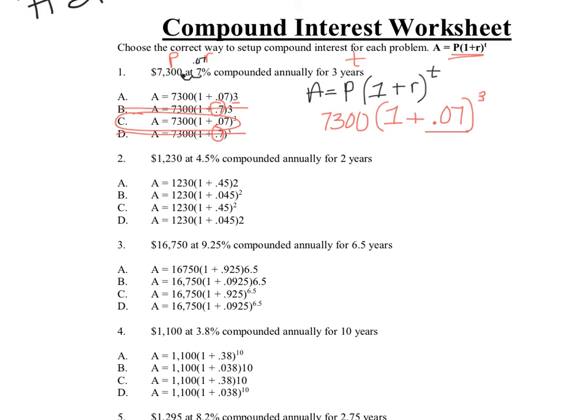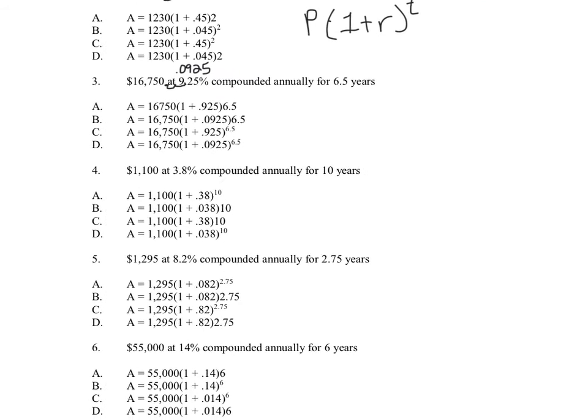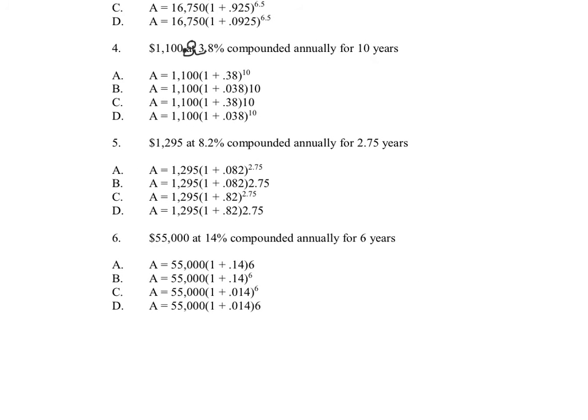Same thing: principle, rate, time. Move your decimal one-two spaces to the left, so this would actually be 0.045. Okay, so those are the main things you need to look for. Everything else kind of looks the same. Use that same formula the whole paper. Number three, nine point twenty-five, one-two, 0.0925. And three point eight, one-two, 0.038.